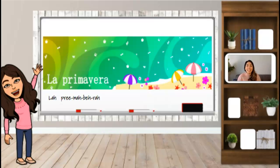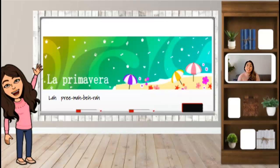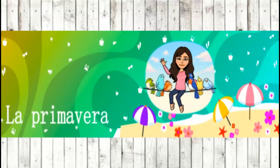Aquí tenemos la primavera. La primavera. So this is spring. Aquí vas a notar que hay un poco de paraguas o sombrillas en la playa. Here you will notice that there are some umbrellas at the beach. La primavera se conoce como un tiempo donde algunas veces llueve. Sometimes in the spring, we see there is some rainfall. But there's also very pleasant weather. Pero también hay tiempos muy, muy bonitos durante la primavera. Tal vez puedas ir a la playa o al parque. Maybe you can go to the beach or to a park. Esa es la primavera.